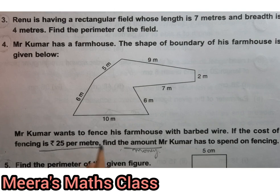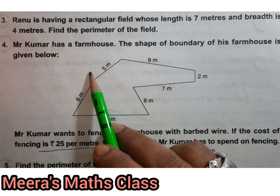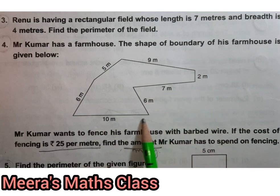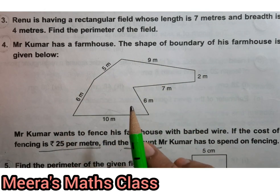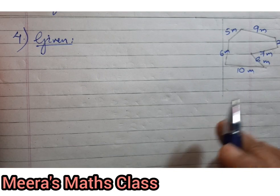We are going to find out how much money will it cost. Now rupees 25 per meter. So per meter, per one meter, per means one, each meter, or for one meter, rupees 25 is the cost of fencing. So when we are going to find out the whole boundary of this farmhouse, then we can calculate how much is the cost.